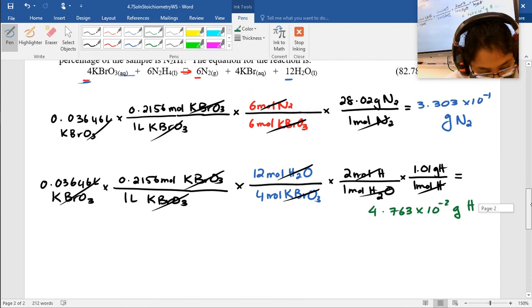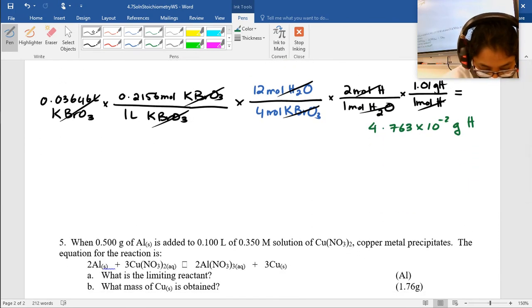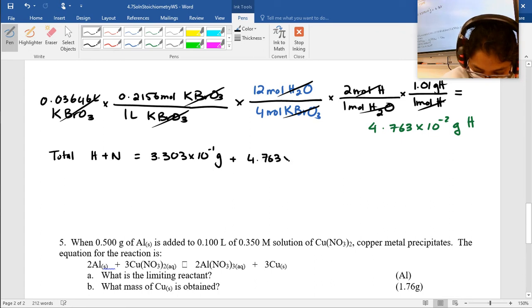So now I'm going to add up the mass of nitrogen and hydrogen. So total mass of hydrogen and nitrogen is going to be my 3.303 times 10 to the negative 1 grams plus my 4.763 times 10 to the negative 2 grams. That will give me 0.37793 grams. I like to keep a bunch of decimals until I get to the end.